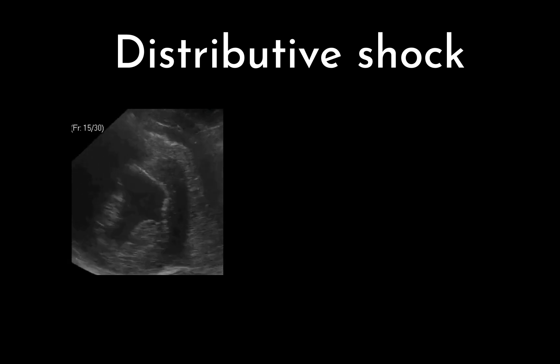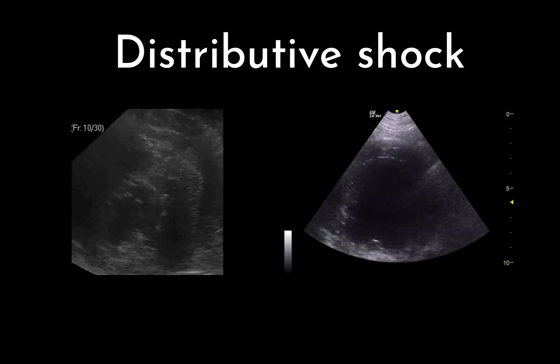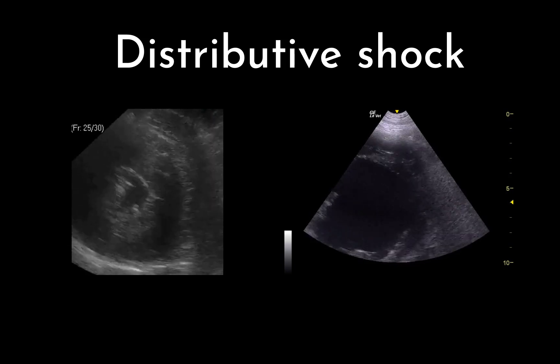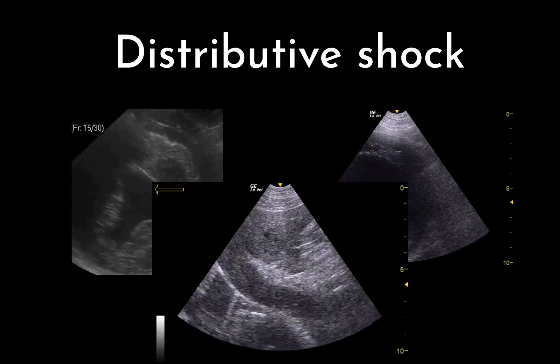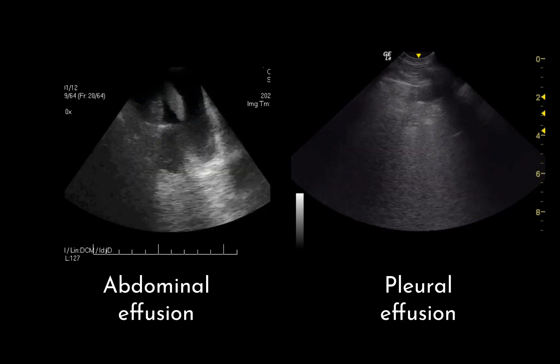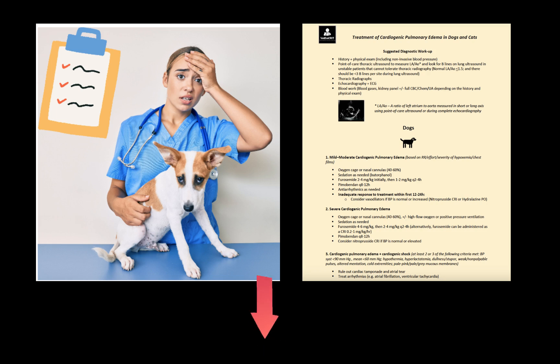Finally, patients in distributive shock may have a hyperdynamic heart due to low afterload and potential volume depletion. However, sepsis-induced cardiomyopathy may result in a hypodynamic heart as well. The CVC may be normal or small, and they may also have septic pleural or peritoneal effusion.